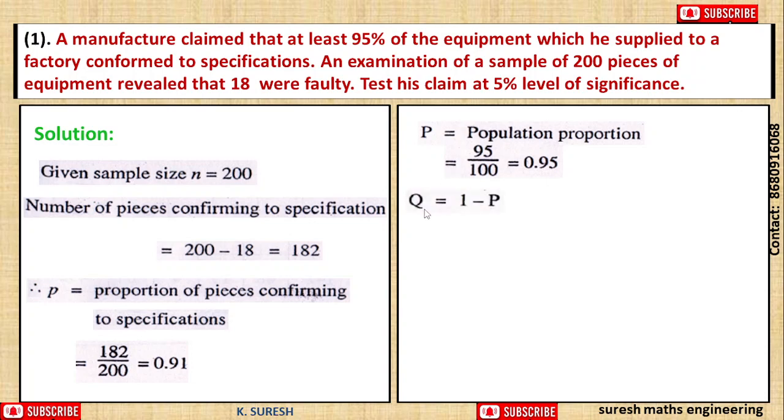Q is equal to 1 minus P. So 1 minus 0.95 is equal to 0.05.